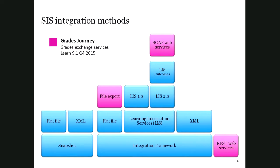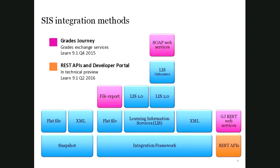We've been adding additional integration capabilities with student information systems over time. In the Q4 2015 release of 9.1, we added Grades Journey Functionality — a generic interface for exchanging assignment and grade data with student information systems — including generic file support, LIS SOAP web services, and REST web services. In the Q2 2016 release, we're extending a new integration framework with REST APIs for SIS data, including common objects such as courses, users, and enrollments.